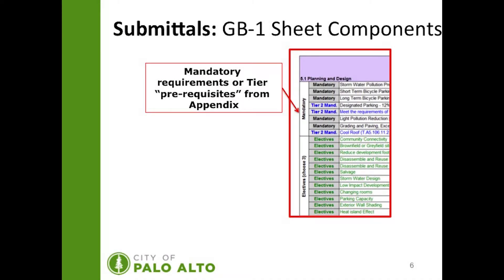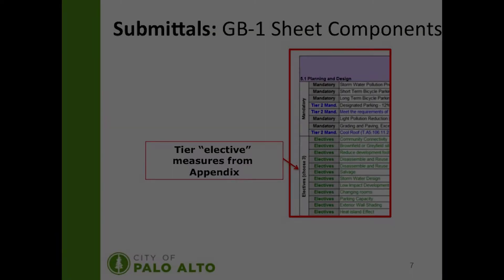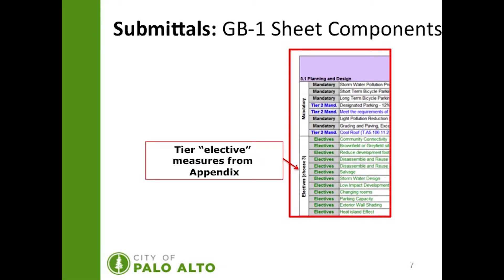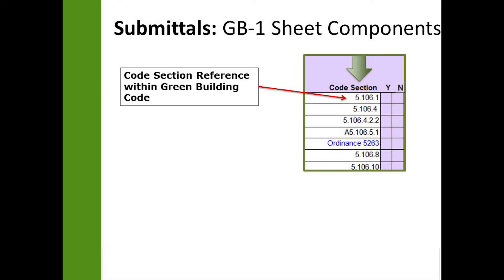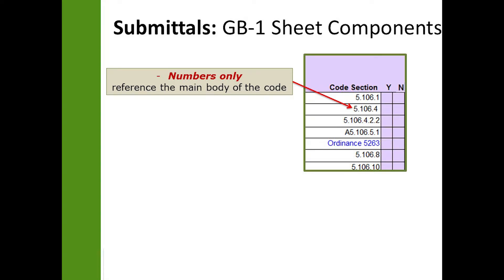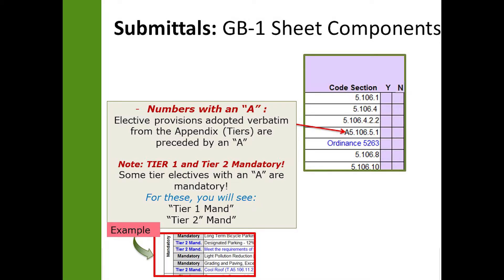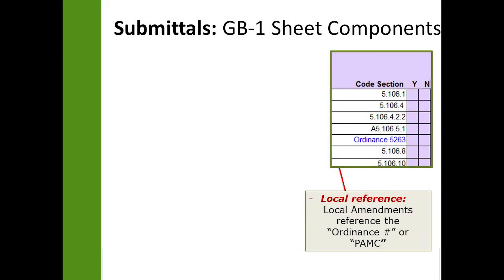The GB1 sheet components show the different requirements for both mandatory and elective requirements. The mandatory requirements or tier prerequisites from the appendix are listed under mandatory. The tier elective requirements are listed under electives and are located in the appendix. The code section reference within the green building code is listed to the right. When there are numbers only, this references the main body of the code. When numbers are preceded with an 'A', that provision is from the appendix. Note that Tier 1 and Tier 2 mandatory requirements also have an 'A', so keep in mind that in some cases items with an 'A' are mandatory. Anything that references a local ordinance will be listed with an ordinance number or Palo Alto Municipal Code.